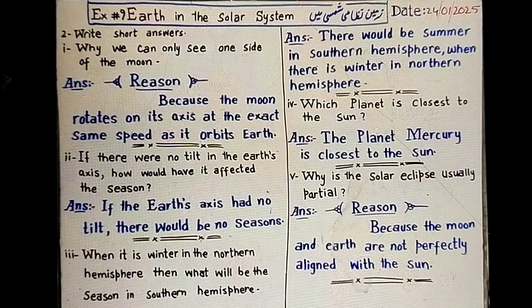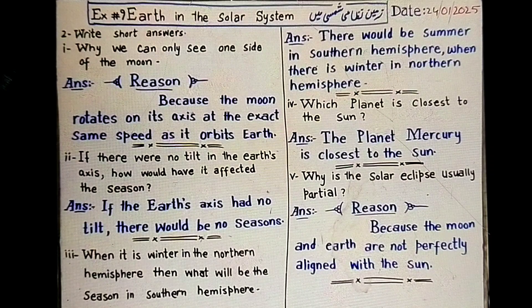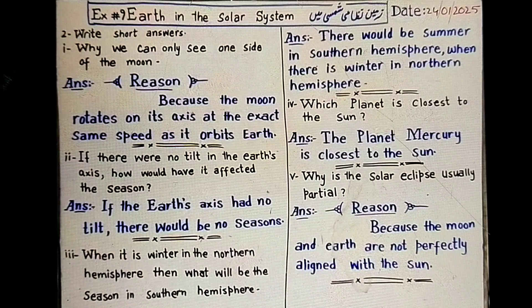If there were no tilt in the Earth's axis, how would it have affected the seasons? If the Earth's axis had no tilt, there would be no seasons.